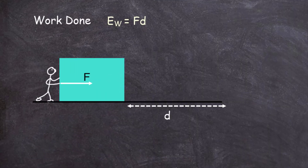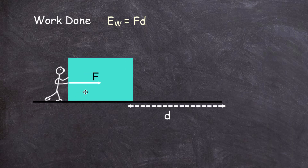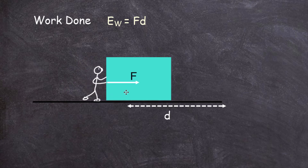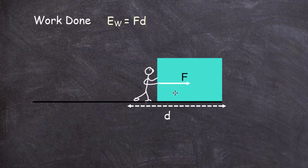Work is done when a force moves an object through a distance. We say work has been done by the force on the object and that energy has been transferred to that object. In the case of a person pushing a box with force F, the amount of work done by the force on the box is F times D, and energy has been transferred to the block.